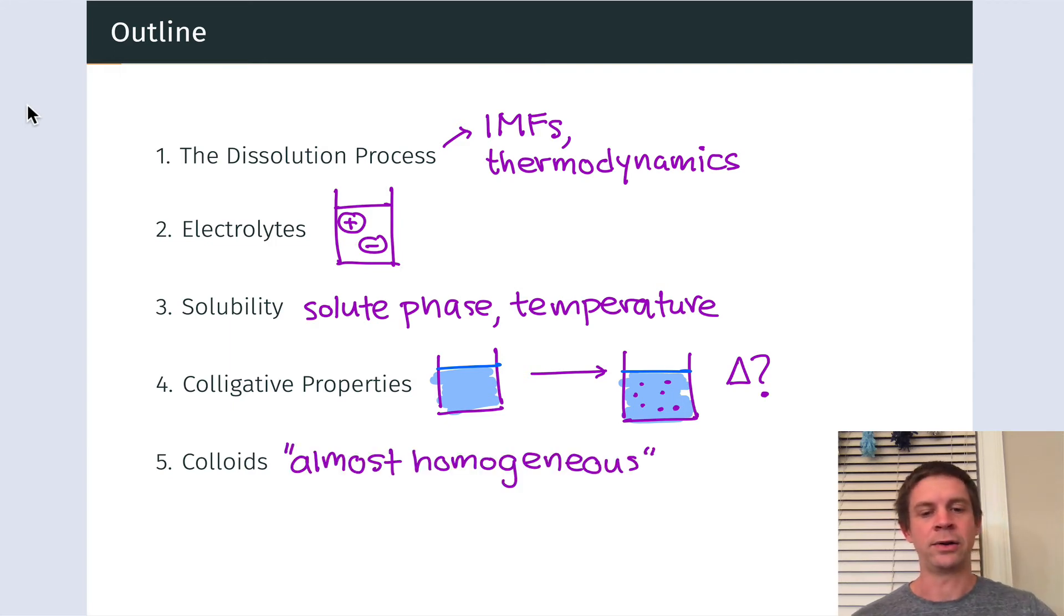And then finally, we'll look at colloids, which are intermediate between solutions, which are definitely homogeneous mixtures, and suspensions, which are still best called heterogeneous, since there are, for example, solid and liquid phases mixed in a suspension. Colloids are sort of in the middle, a kind of mesophase, and that gives them some interesting and unique properties that we don't see in other types of mixtures.